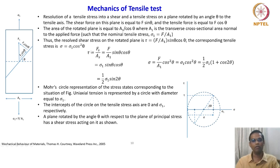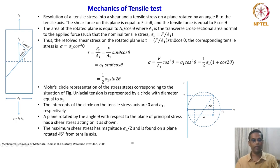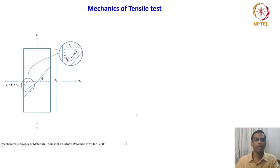Whatever we are showing as resolved shear stress and tensile stress can also be obtained by simply plotting on the Mohr circle. The maximum shear stress has a magnitude of σ₁/2, and it is found on the plane rotated 45° from the tensile axis. At 2θ = 90°, θ becomes 45°, giving the maximum shear stress—which we already knew.